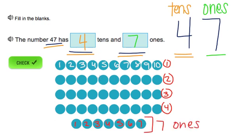So we had 40 or four groups of ten, seven ones. We get a number 47.